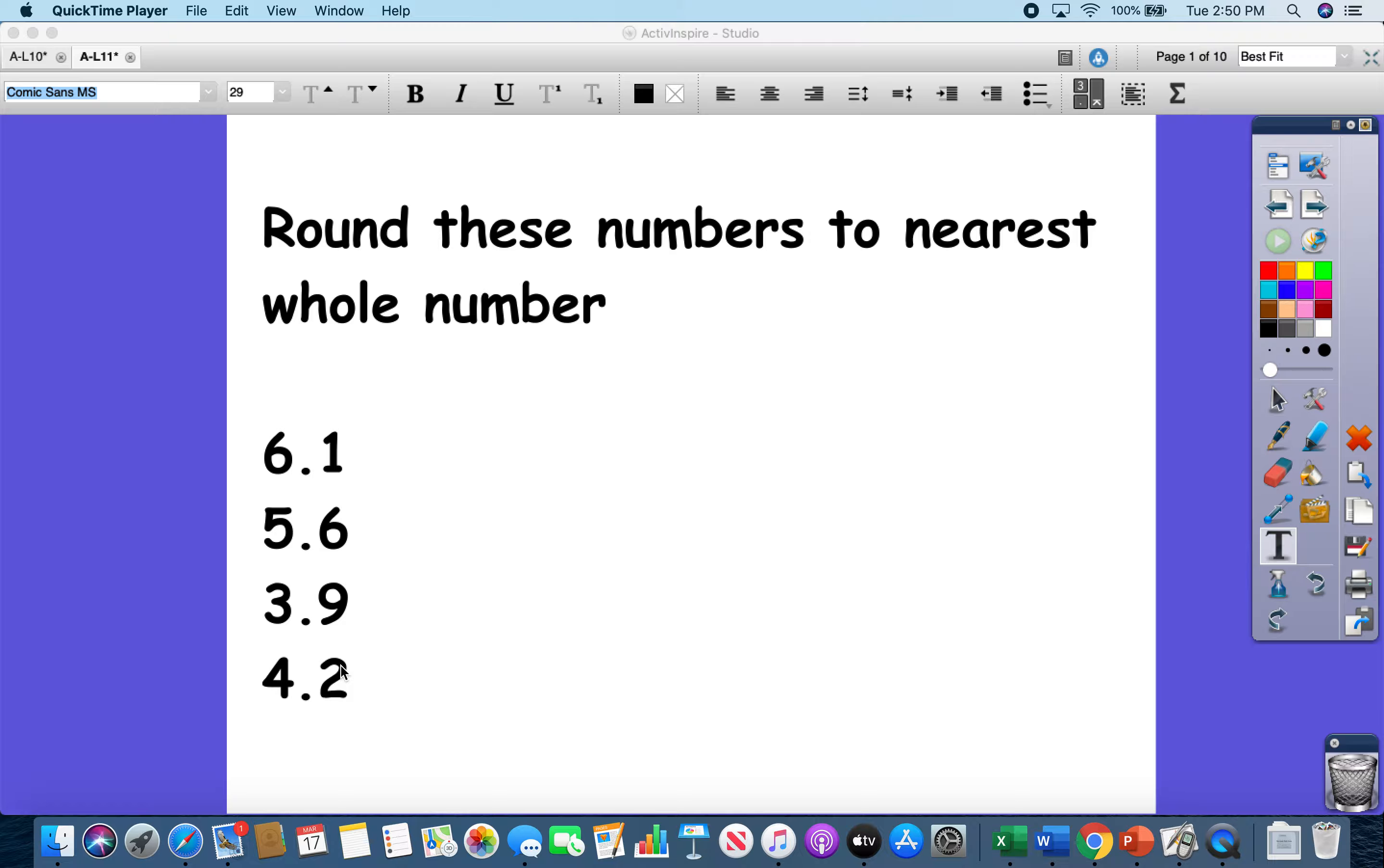So when you look at these, remember yesterday, or whenever you just watched the first video, that you learned to look at the number, find the whole number, and then look at the number to the right. Remember, 1 through 4 rounds down, whereas 5 through 9 rounds up.